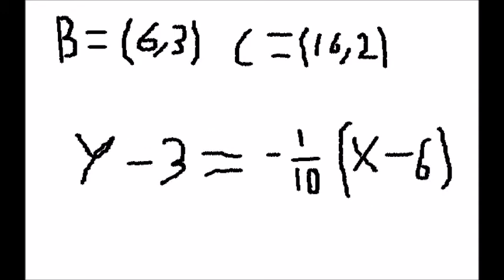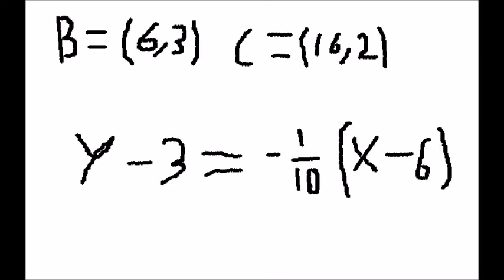We can then use point slope form to find the equation of the line, which is y - 3 = -1/10 × (x - 6), further simplified to y = -1/10 × x + 3.6.